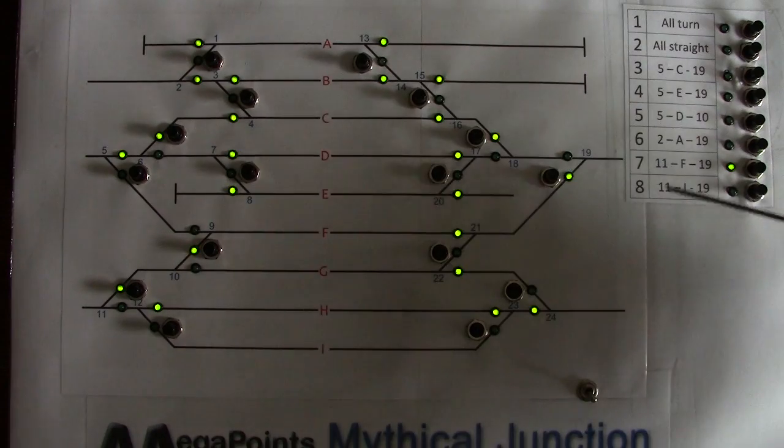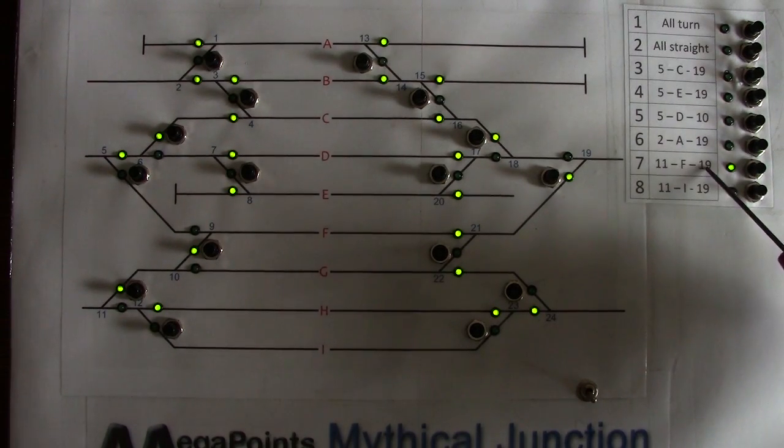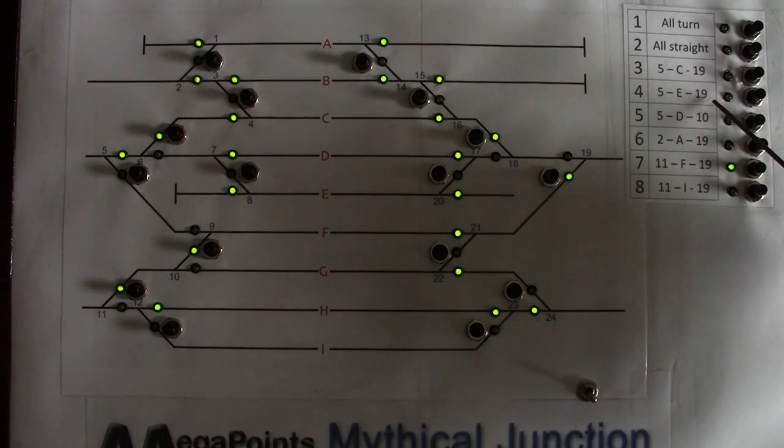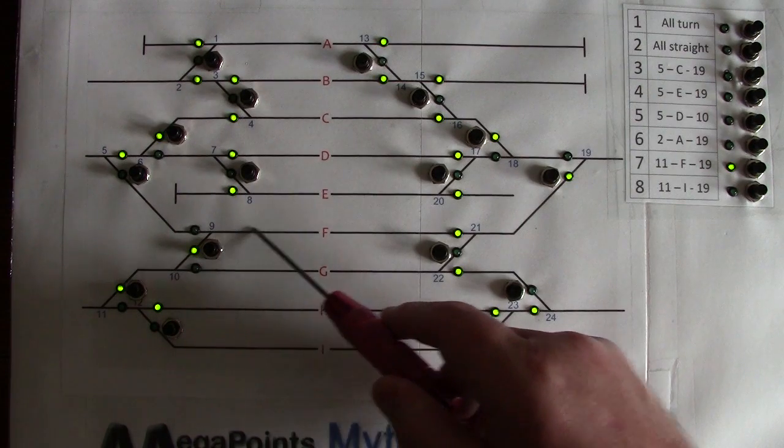was already in use with route three. So we come in at eleven, up through the green, up through here, through road F, green light across these points, green light and out to nineteen. So nineteen was shared.